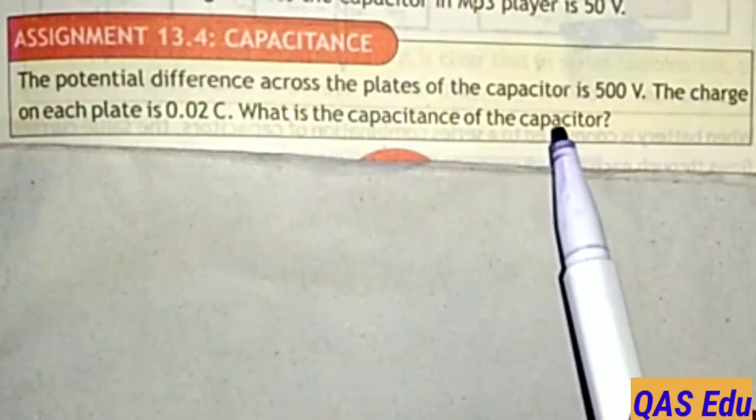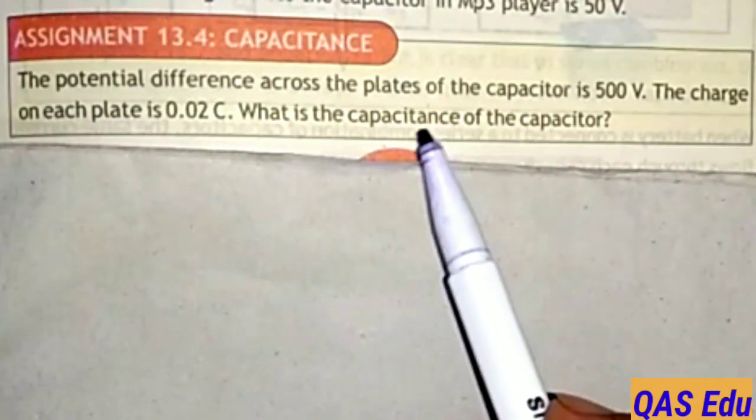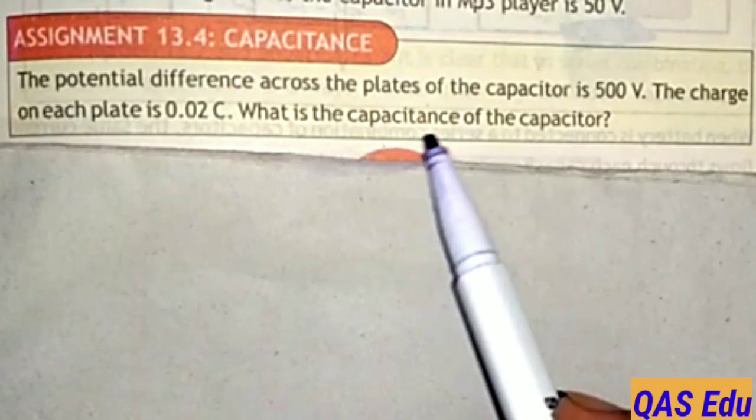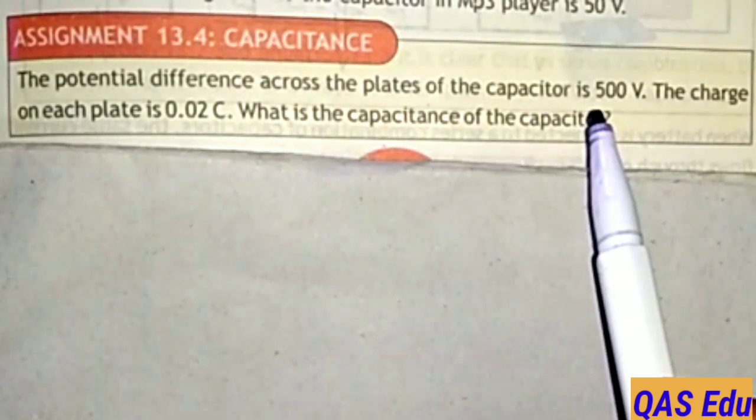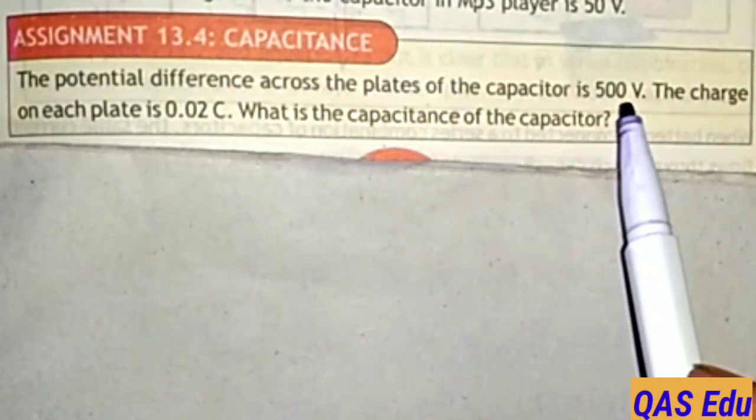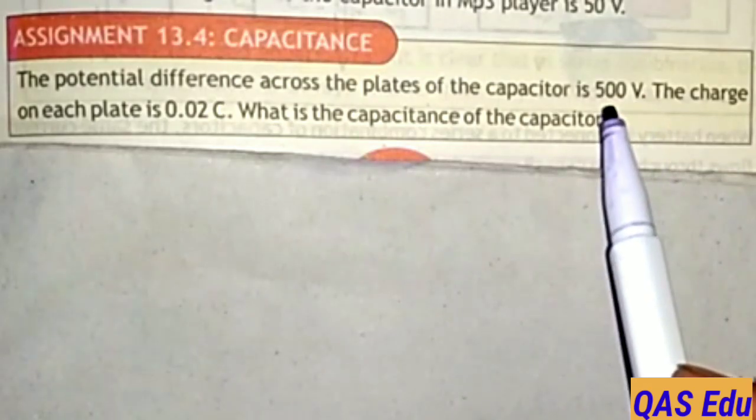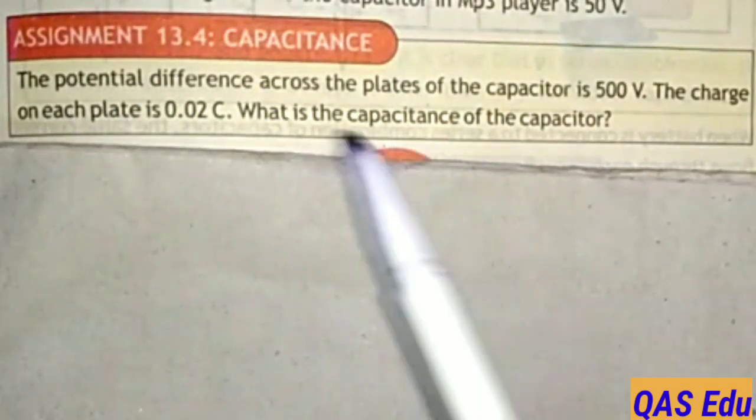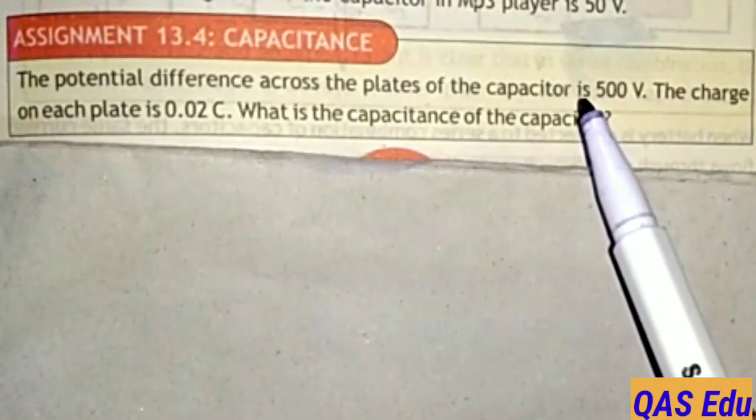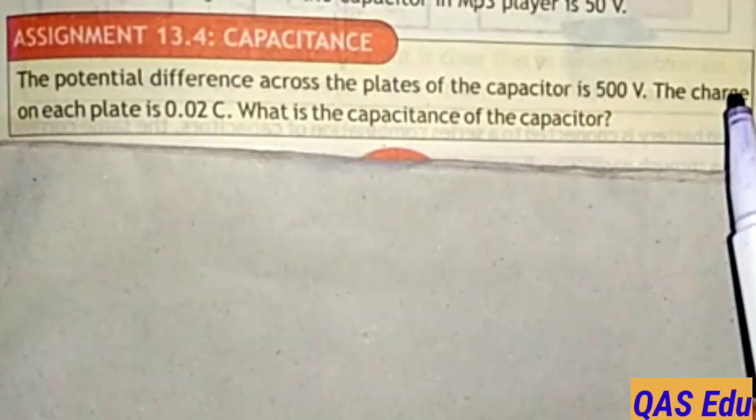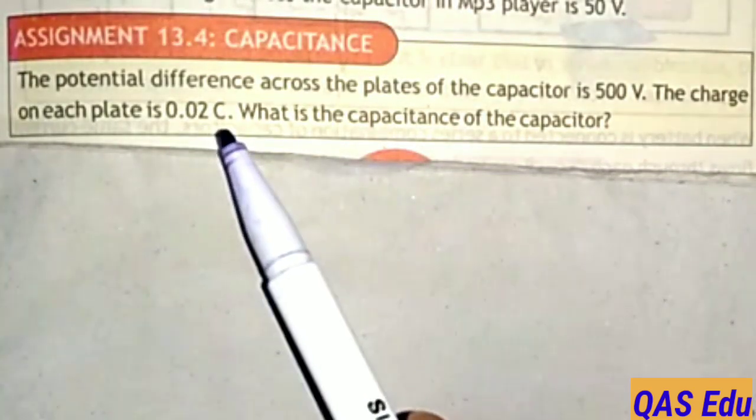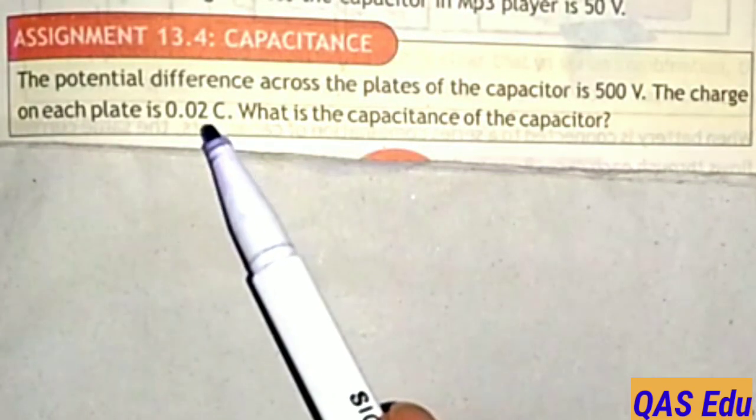Capacitance is the ability of a capacitor to store charge. Now let's write the given data. Potential difference is 500 volt, the voltage or potential difference.